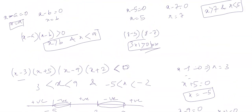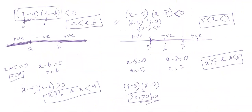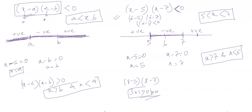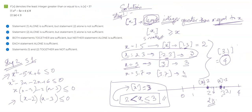One important thing to remember: whenever you have a less than sign with a product of two factors, the range is always between those two numbers. Now going back to the question — for Statement 1, (x - 2)(x - 3) ≤ 0, the zero points are 2 and 3. Writing positive, negative, positive on the number line and looking for negative (or equal to zero), the range is 2 ≤ x ≤ 3.